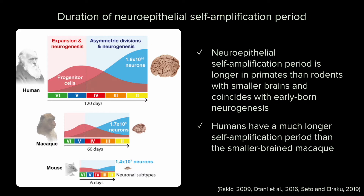In primates, the self-amplification period coincides with the generation of early-born neurons, whereas in mice, the amplification period largely ceases before neurogenesis begins. In an organoid study, humans were found to have a much longer period than macaques during which we balance progenitor cell expansion with neurogenesis, contributing to our larger brain.